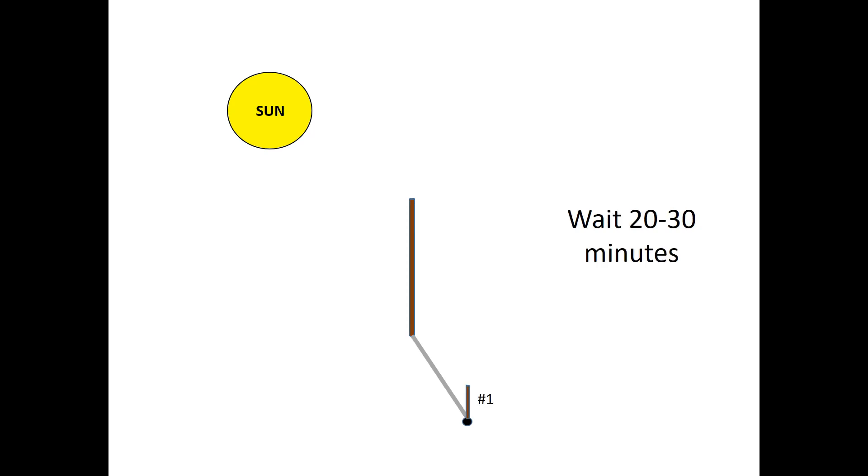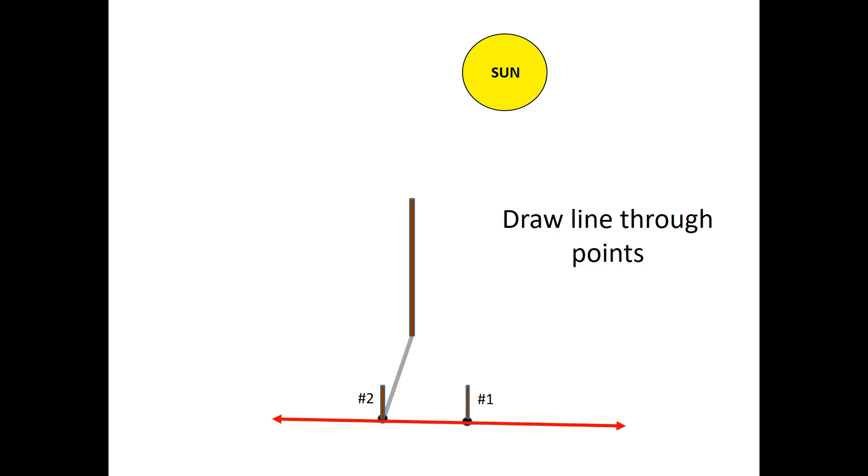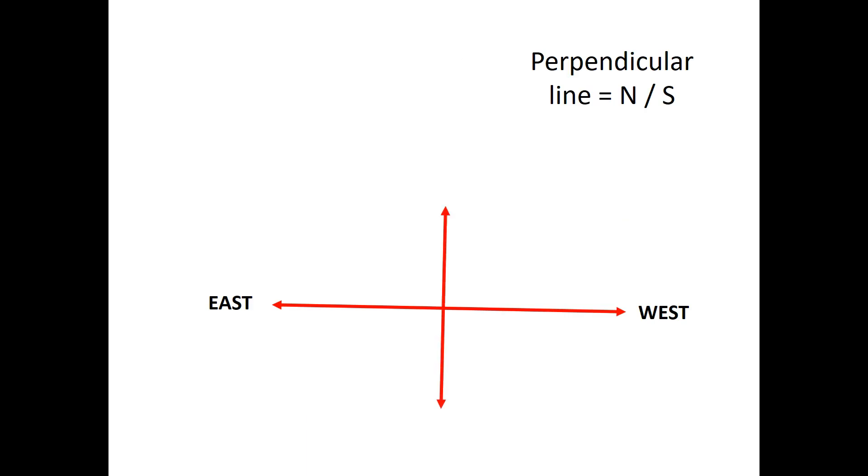Then after waiting at least 20 or 30 minutes, you mark the top end of the stick's shadow again, and then you draw a line between those two points. That line runs east and west, and the end nearest the second mark points east, and then from there you just add a perpendicular line, and that line runs north-south, and there you go.